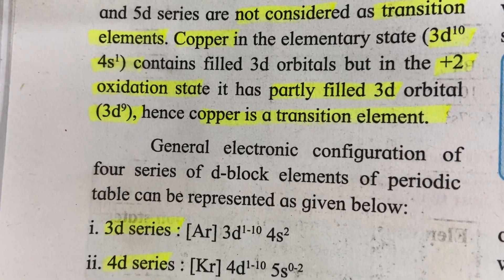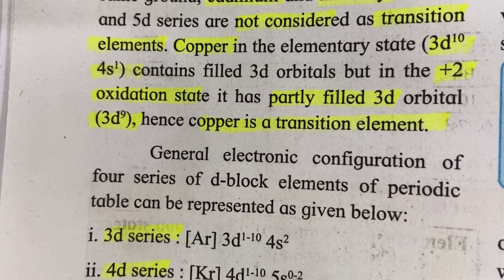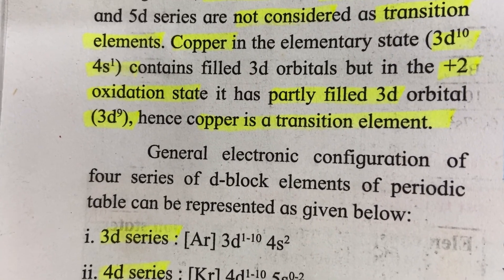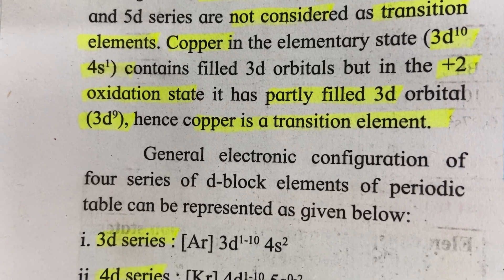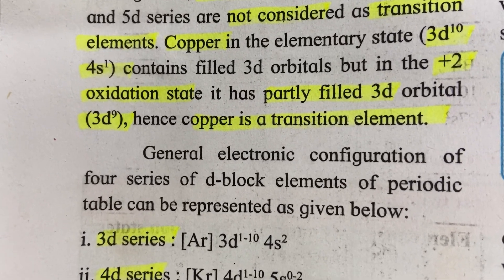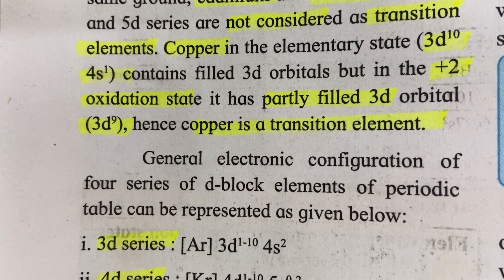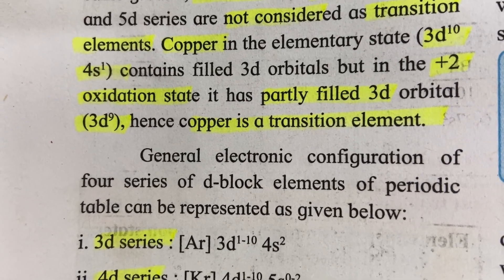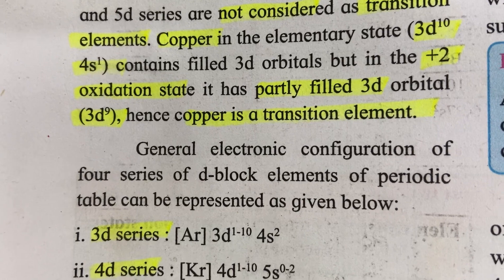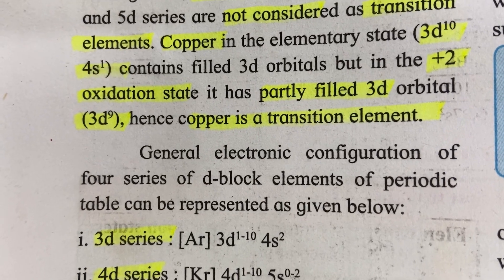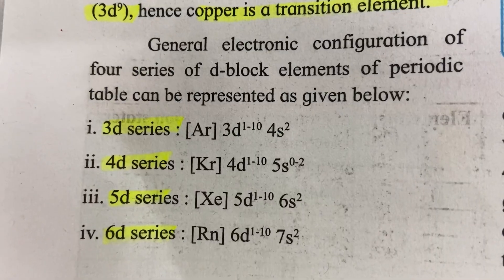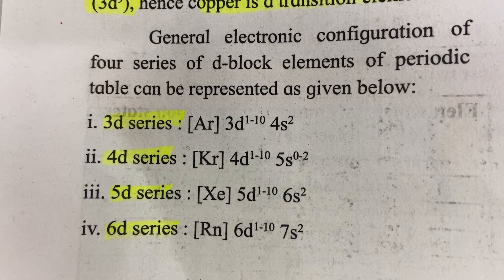Copper in the elementary state — 3d¹⁰ 4s¹ — contains filled 3d orbitals. But in the +2 oxidation state, it has a partly filled 3d orbital, that is 3d⁹, and hence copper is a transition element.